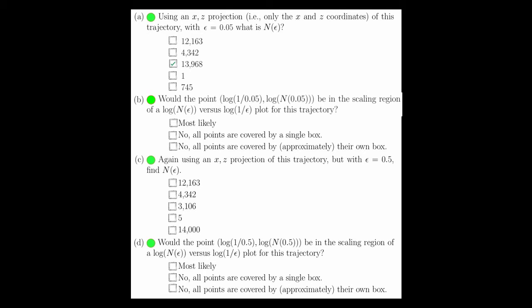Part B asks, would this point, that is log 1 of that epsilon over log of n of epsilon, be in the scaling region of a log n epsilon versus a log of 1 over epsilon plot for this trajectory? And the answer to this is no.